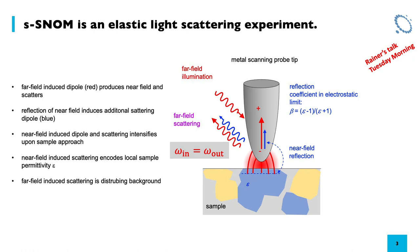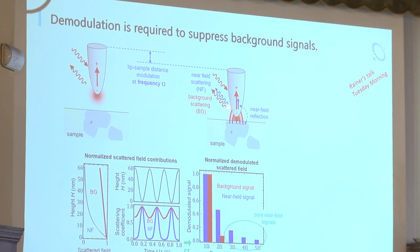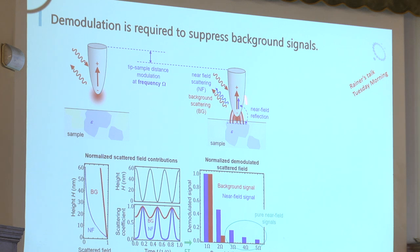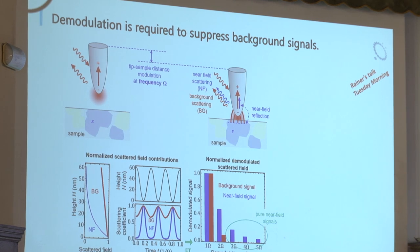As you already heard in Reiner's talk, one thing we have to do is demodulate our signal. This is because the signal we are interested in is the near-field scattering — the blue arrow here. The background scattering is so much stronger, so we have to suppress it to get the near-field signal. The way to do this is to vibrate the tip at a frequency omega and demodulate our detector signal at a higher harmonic of this vibration.